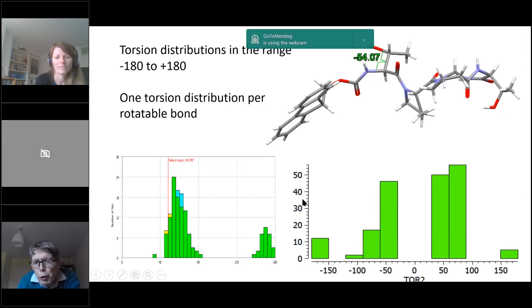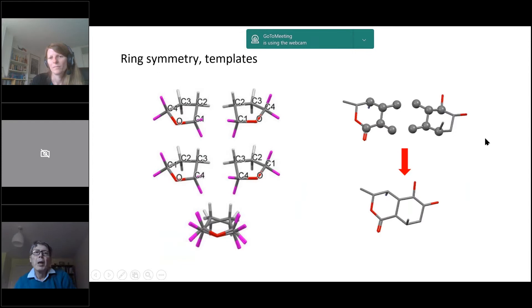In the Conformer Generator version, torsion distributions for a rotatable bond are given in the full range minus 180 to plus 180, whereas for this bond here Mogul will give you a distribution in the range 0 to 180. The implicit assumption being that it's symmetric about zero. Normally that will be true, but of course if you've got an achiral environment like this one it won't be true and there's some asymmetry. Another difference is that the Conformer Generator Mogul only gives you one torsion distribution per rotatable bond.